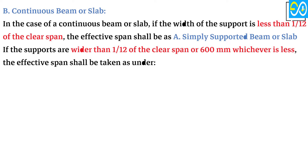B. Continuous beam or slab: In the case of a continuous beam or slab, if the width of the support is less than 1/12th of the clear span, the effective span shall be as in clause 22.2A for simply supported beams. If the supports are wider than 1/12th of the clear span or 600 mm, whichever is less, the effective span shall be taken as follows.